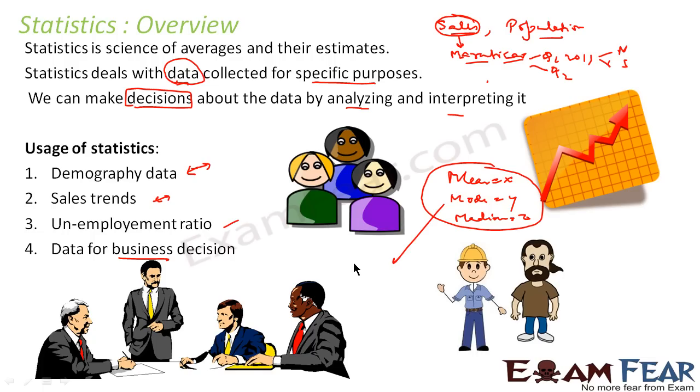These businessmen don't have time to analyze and interpret the whole data. They'll just take these values - mean, median, mode - and they'll make a decision. For making business decisions we need statistics because statistics converts huge chunks of raw data into meaningful business data. These are some examples of usage of statistics in real life.